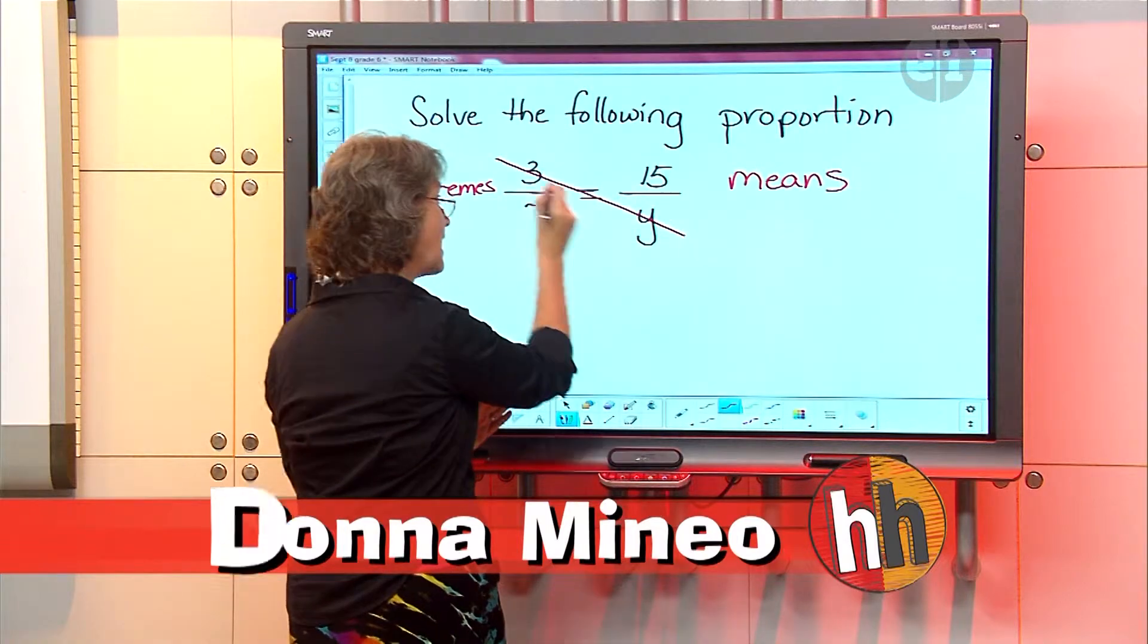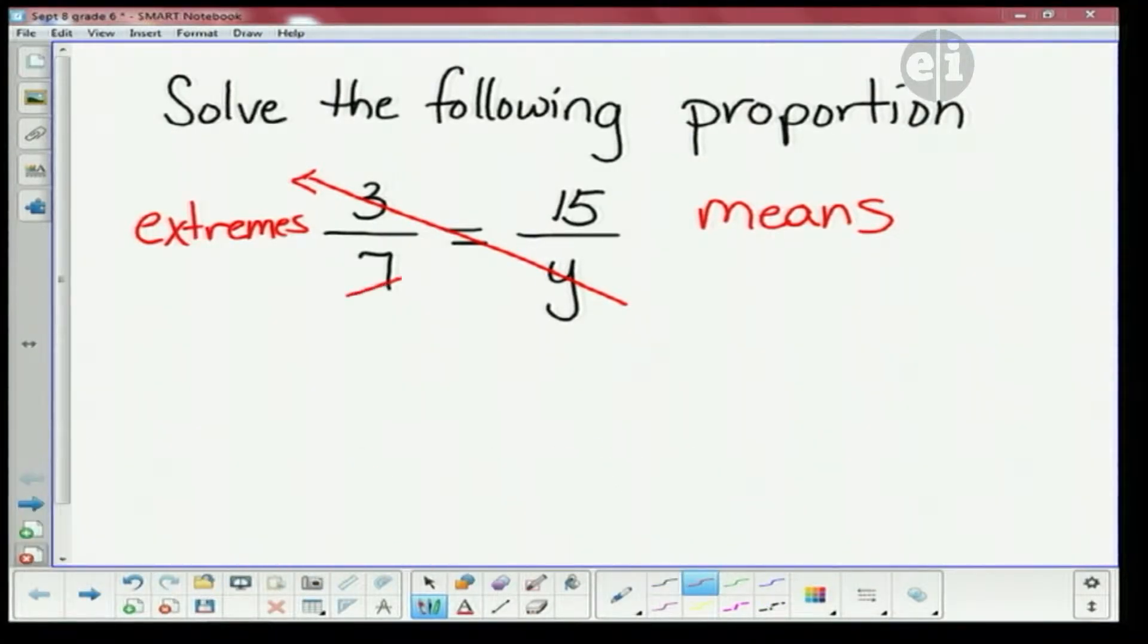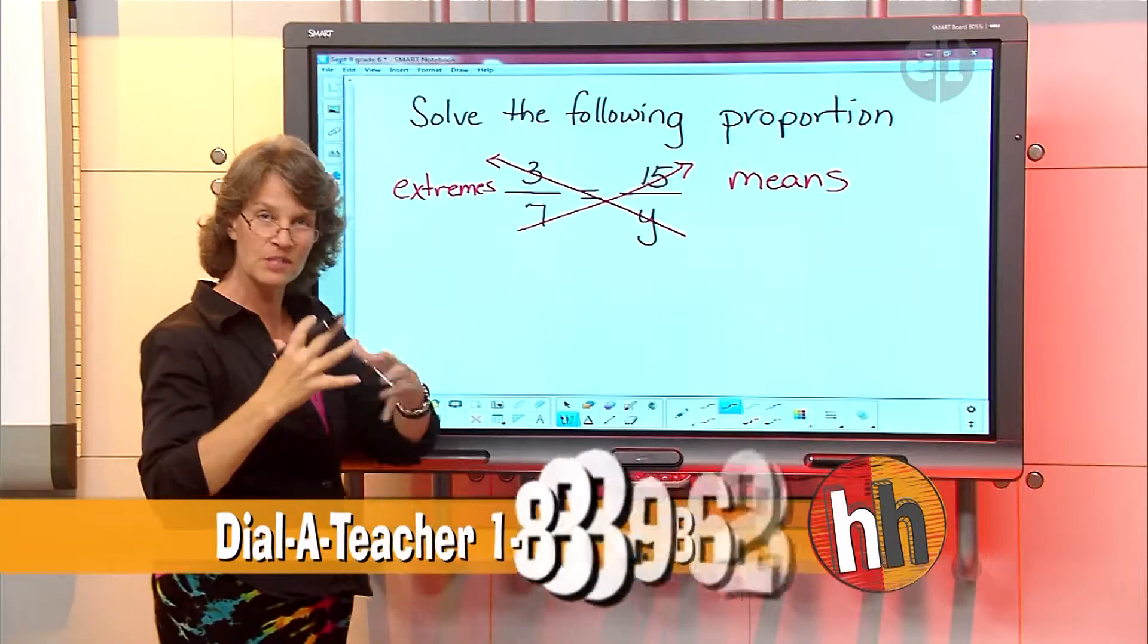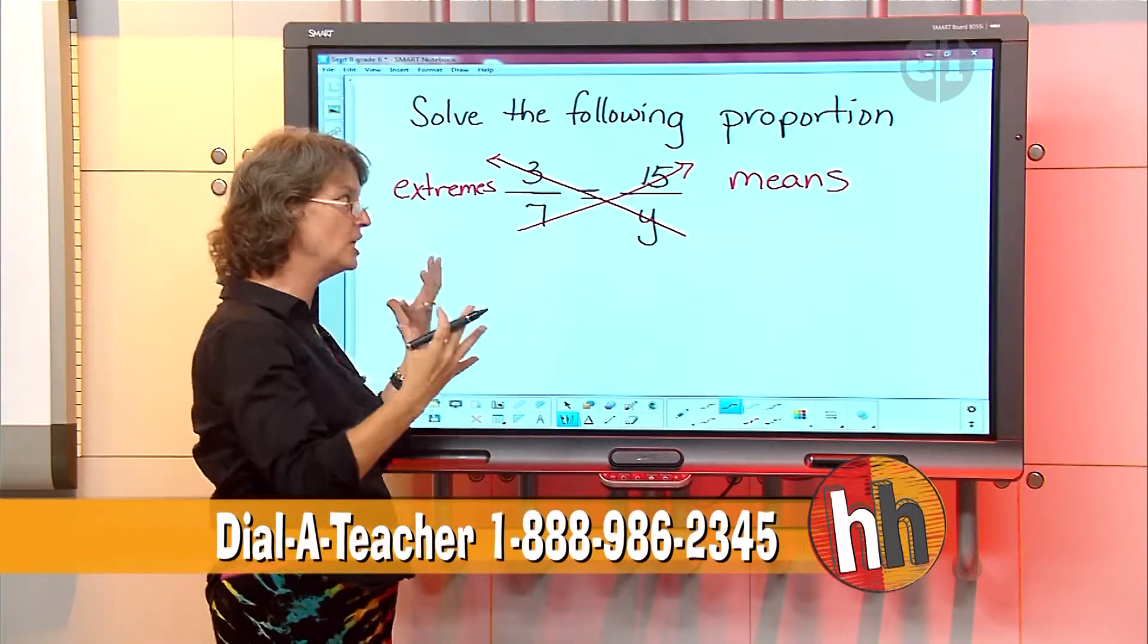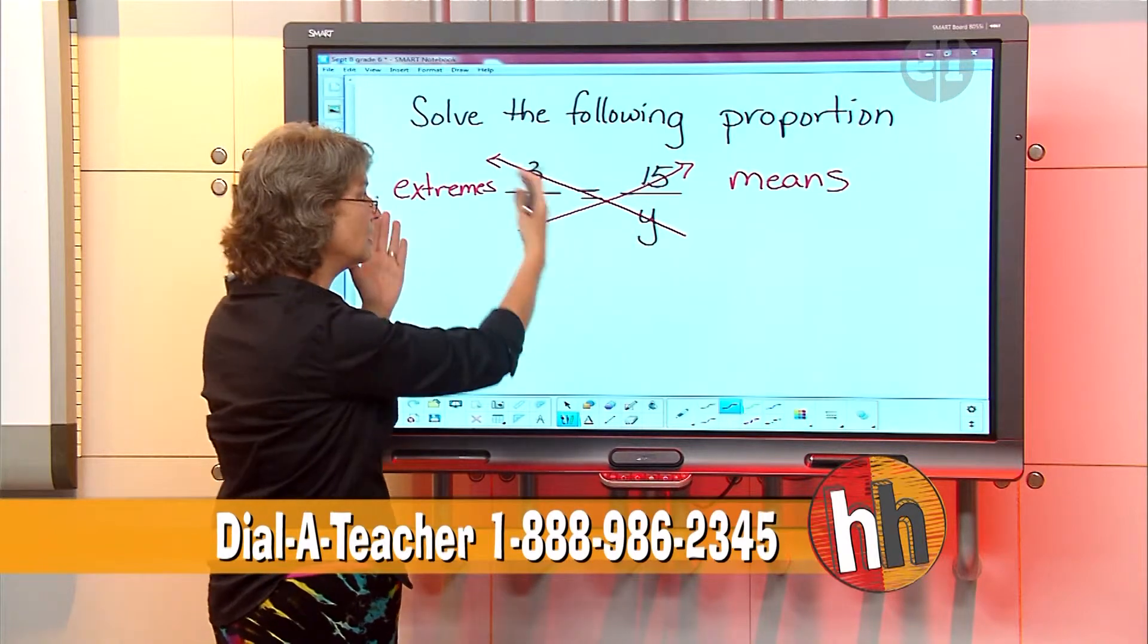Because if I cross multiply, this is my extremes, this way is my means. So this helps you understand when the state comes on a question and says 'what's the extreme or what's the means' - you know go alphabetical, extremes and means.